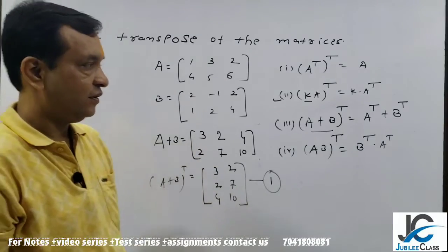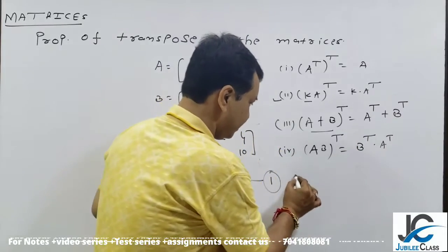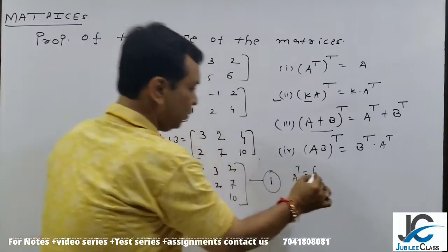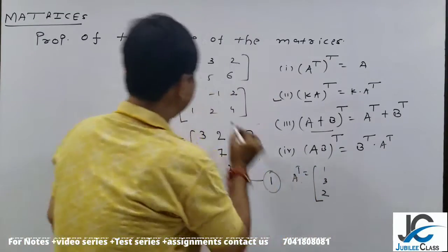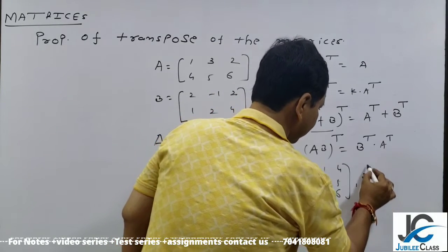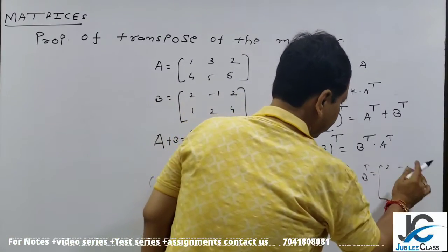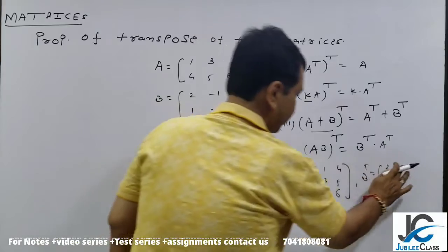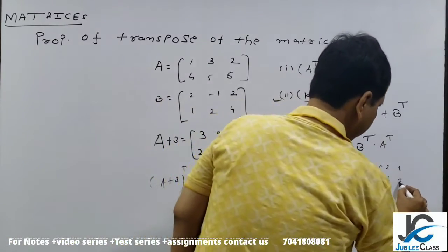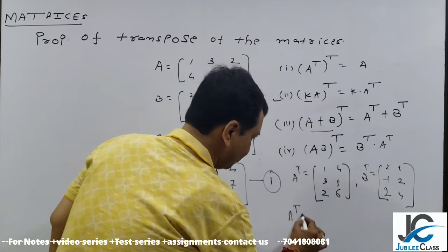Now, what we want to prove? This one. First is A^T. Very simple: [1, 4; 3, 5; 2, 6]. B^T, simple: [2, 1, 2; -1, 2, 4]. Is that clear? Now, addition of these two.